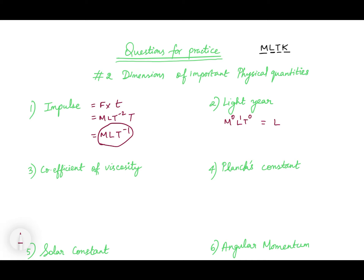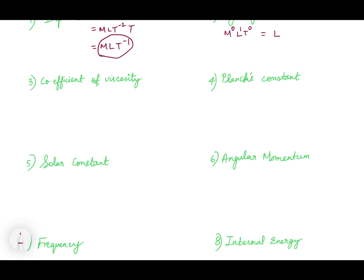Now if you see the coefficient of viscosity, this is based on Stokes' law. Stokes has given a formula: F = 6πηrv. In this, F is force — force has a dimension. 6π is a constant, it does not have any dimension. Eta (η) is the coefficient of viscosity, r is the radius, and V is the velocity.